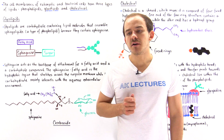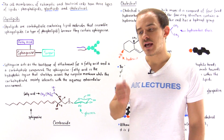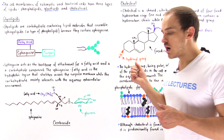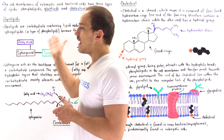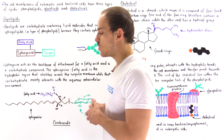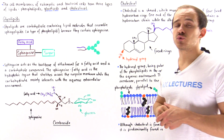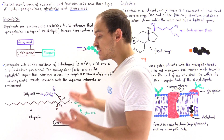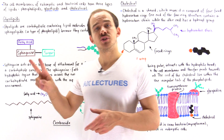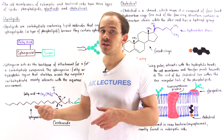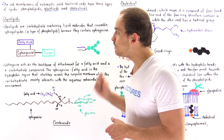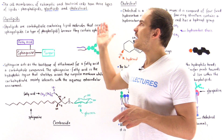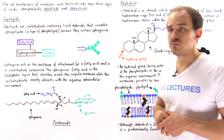The cell membranes of eukaryotic cells and some bacterial cells contain three different types of lipid molecules: phospholipids, glycolipids, and cholesterol molecules. Previously we focused on phospholipids, which come in two types — phosphoglycerides and sphingolipids. In this lecture we're going to focus on glycolipids and cholesterol molecules.